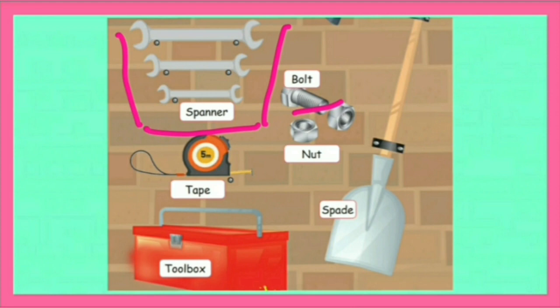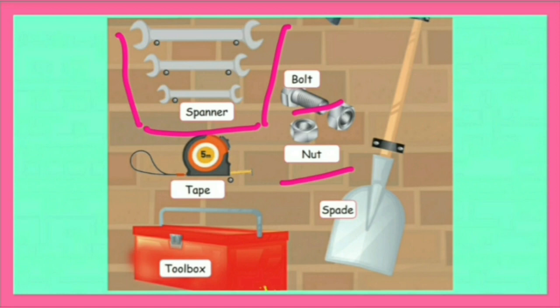Nut. Nut is a small piece of metal with a hole through the middle which is screwed onto a bolt. To fasten things together, use a wrench to loosen the nut.